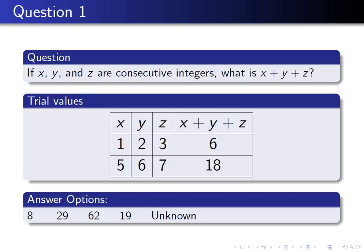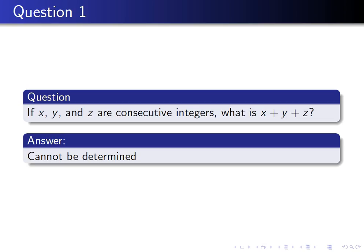We can try another set of consecutive integers: 5, 6, and 7, and they add up to 18. Now those values don't appear on the answer options, so we can immediately rule out every answer that contradicts our trial values and we can jump to the answer being that it cannot be determined.